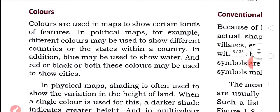Now, different colors are used in the map. They are used for showing the mountains, plains, forests, and water. So these colors are used in the map to show the different features.